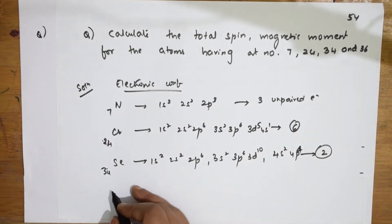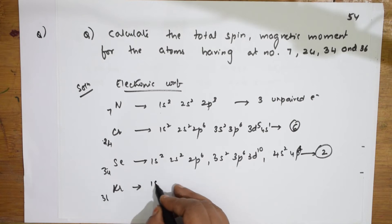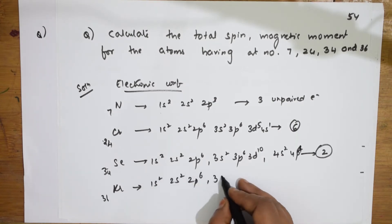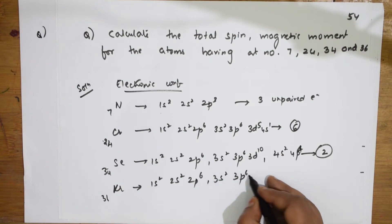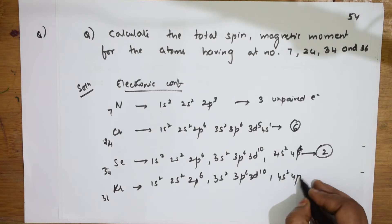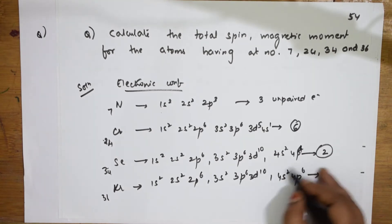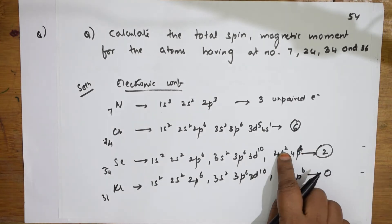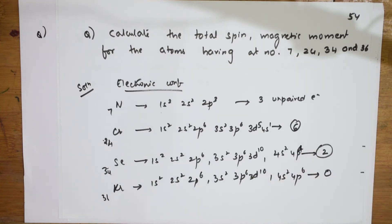Next comes the 36th element — krypton. Its configuration ends with 4s², 4p⁶. All subshells are completely filled. So the number of unpaired electrons is 0.